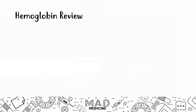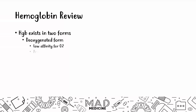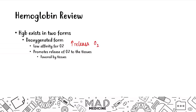Let's review hemoglobin really quickly, and then we'll go on to the curve itself. Hemoglobin exists in two main forms. You have the deoxygenated form, which has low affinity for oxygen. It's going to promote the release of oxygen to the tissues, as well as being favored by the tissues. The tissues like the deoxygenated form because you're going to have increased release of O2.